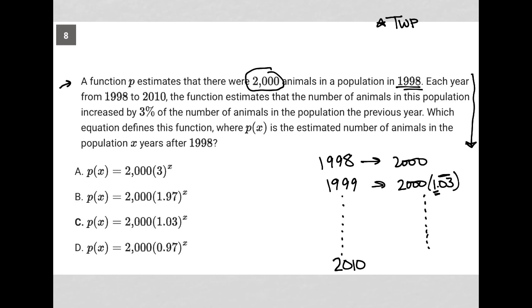Which equation defines this function where P of X is the estimated number of animals in the population X years after 1998? I'm going to use my calculator here and actually figure out what is this value for 1999. What is 2,000 times 1.03? Just throw that into my calculator really quickly. 2,000 times 1.03. The number I get here is 2,060.